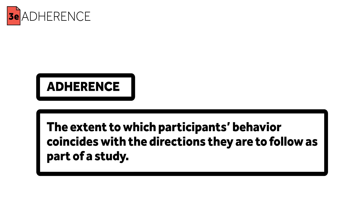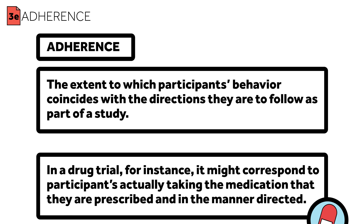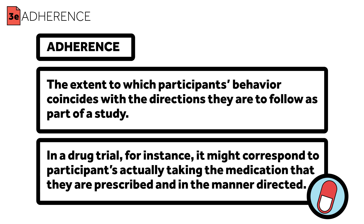You've got your participants recruited, you're ready to go, but your potential troubles aren't over yet. You still need to worry about adherence. If you don't measure it, and you don't report it, there's a good chance your research may not be reproducible. Adherence refers to the extent to which participants' behavior coincides with the directions they are to follow as part of the study. In a drug trial, for instance, it might correspond to a participant actually taking the medication they are prescribed in the manner directed. That's the topic of this module in Experimental Design.